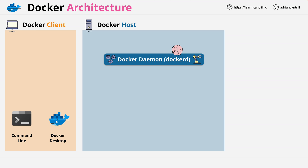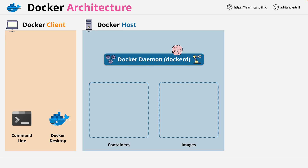The API access is used by Docker clients, which are the client side of the Docker engine. This can either be the Docker command line or Docker Desktop, but it can also be applications which you or a developer might code, which interact with the Docker daemon directly. On the Docker host, under the control of the Docker daemon, are two main things: containers and container images. There are other elements such as storage and networking, but I'll be talking about those in much more detail elsewhere in the course.